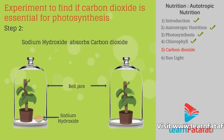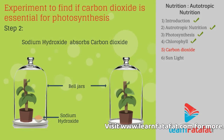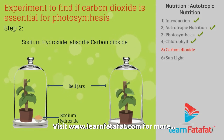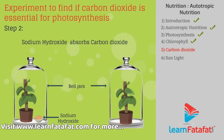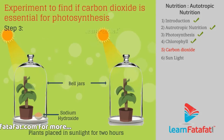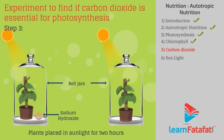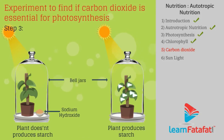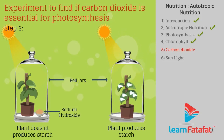Sodium hydroxide absorbs the carbon dioxide present in one jar, hence there is no carbon dioxide available for photosynthesis. Keep the plants in sunlight for two hours and check a leaf of each plant for starch. The leaf of the plant placed near sodium hydroxide does not produce starch, while the other plant produces starch. Hence, it is confirmed that carbon dioxide is essential for photosynthesis.